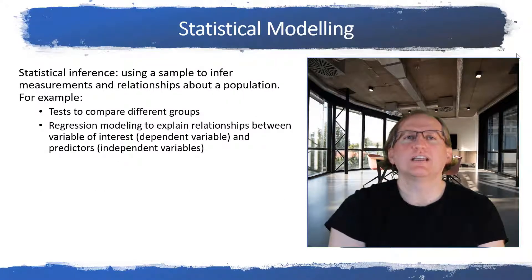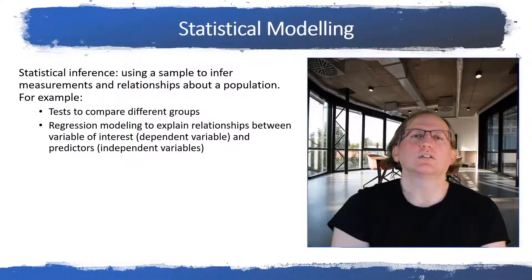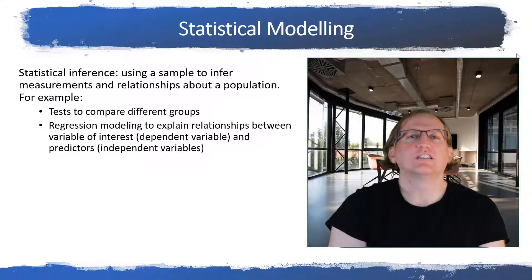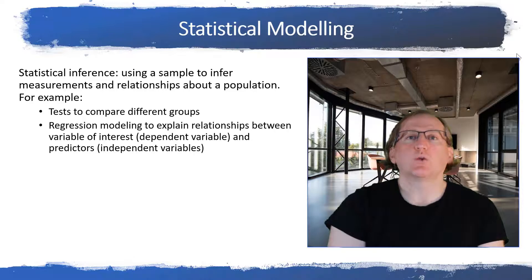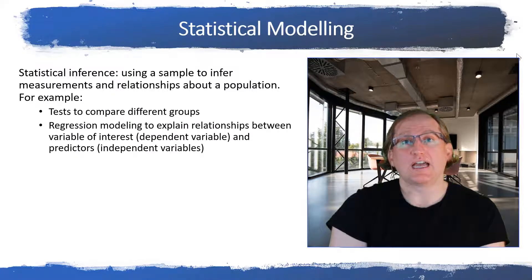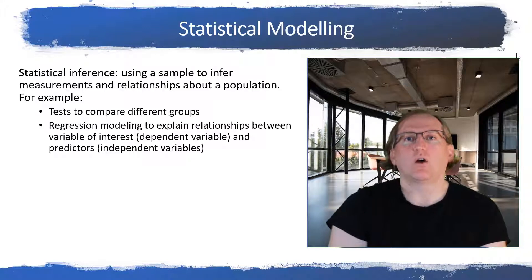So the last thing that we will see is statistical models or what we might call statistical inference. So inference is where we take a sample and we use that sample to try and determine things about population. So we could be trying to compare differences, so differences between groups. We might be doing what's called regression modeling, where we're trying to model a dependent or an outcome variable based on a set of independent or predictive variables. So let's have a look at a particular outcome and how do each of these different things all together effect that outcome.